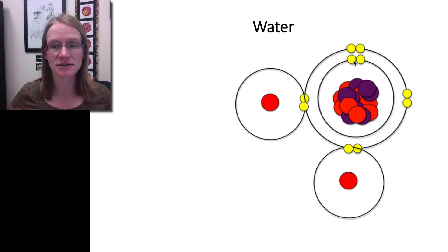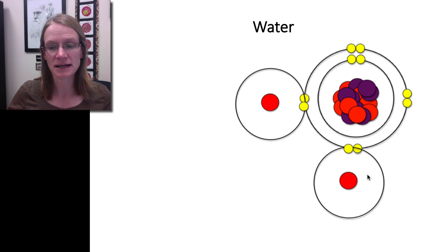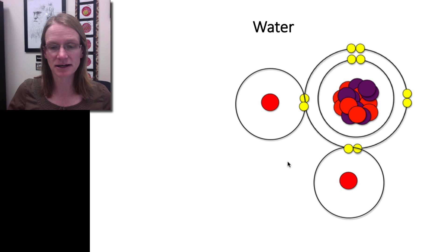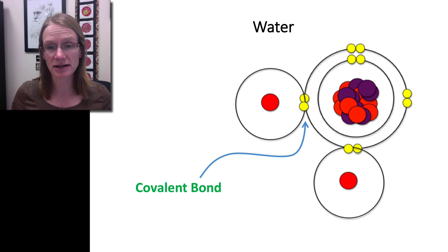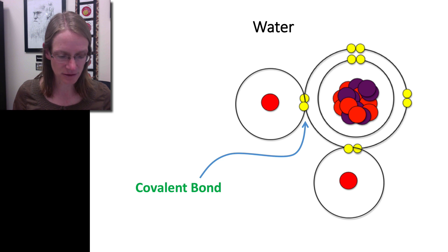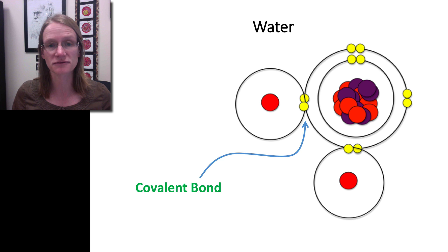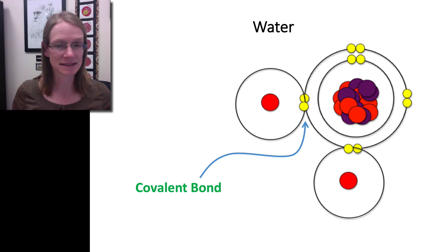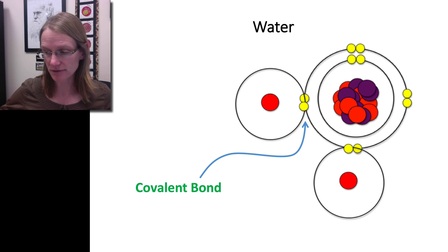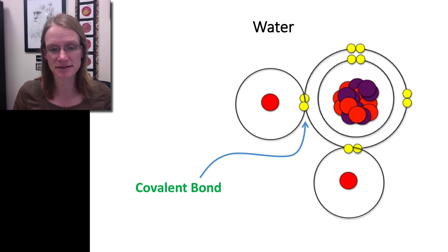You can see the oxygen has a full inner shell of two, and the outer shell, by simply sharing, can have eight. The hydrogens are also happy because they each now have a full inner shell of two. That's how our oxygen and two hydrogens work out very nicely. The bond — the sharing of those two electrons — is what's called a covalent bond. 'Co' means together or to share, and 'valent' refers to the valence — they're sharing those valence electrons. That's where everyone gets happy.